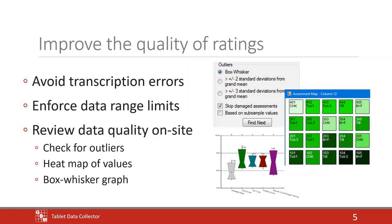You'll hopefully see an improvement in data quality by using tools the software provides. We avoid transcription errors because you're entering values directly into the software — no second stage of writing on paper and then re-entering into software. ARM can enforce data range limits — for example, if something is supposed to be a percentage and you type 112, ARM flags that. And there's data review as well.